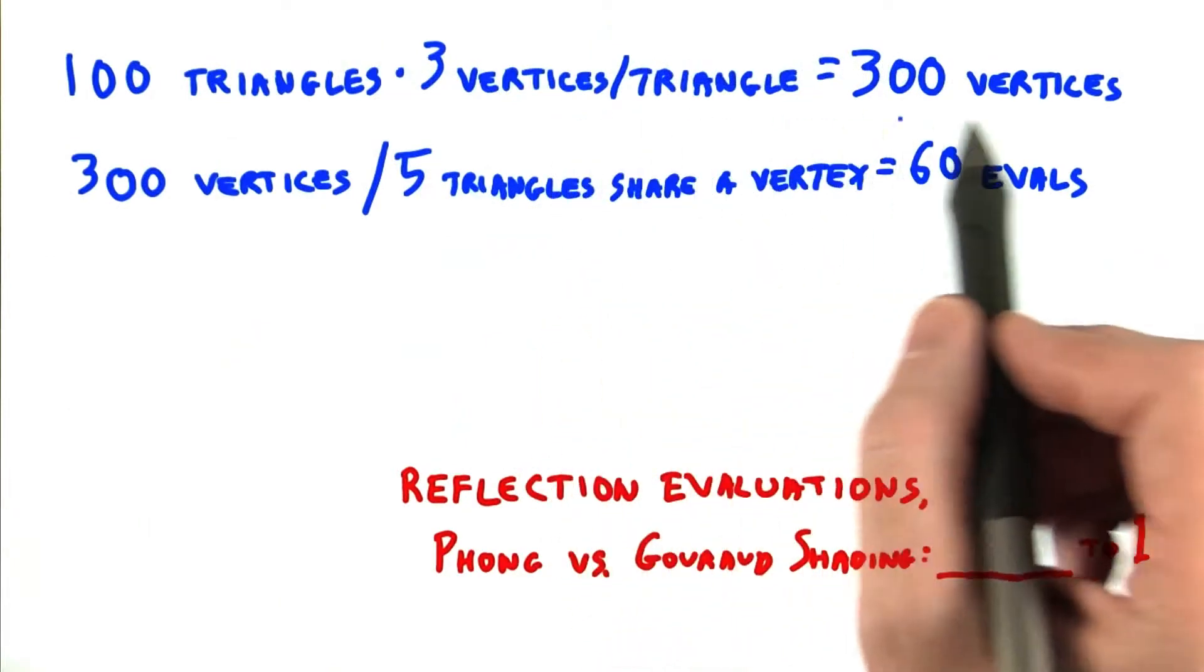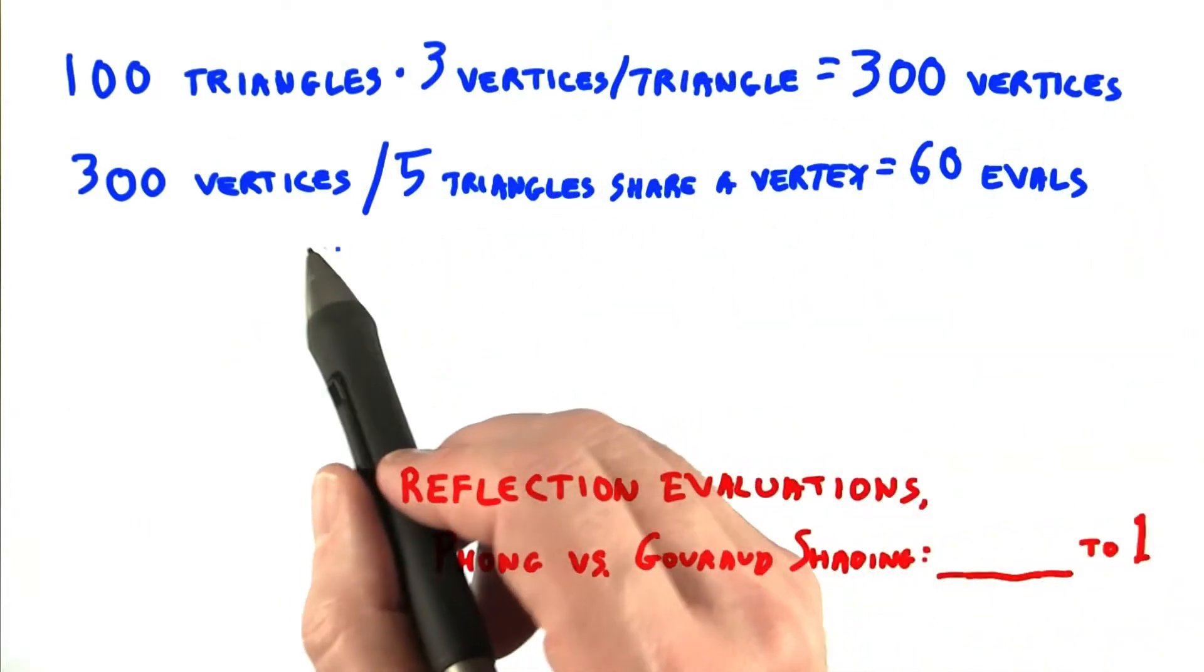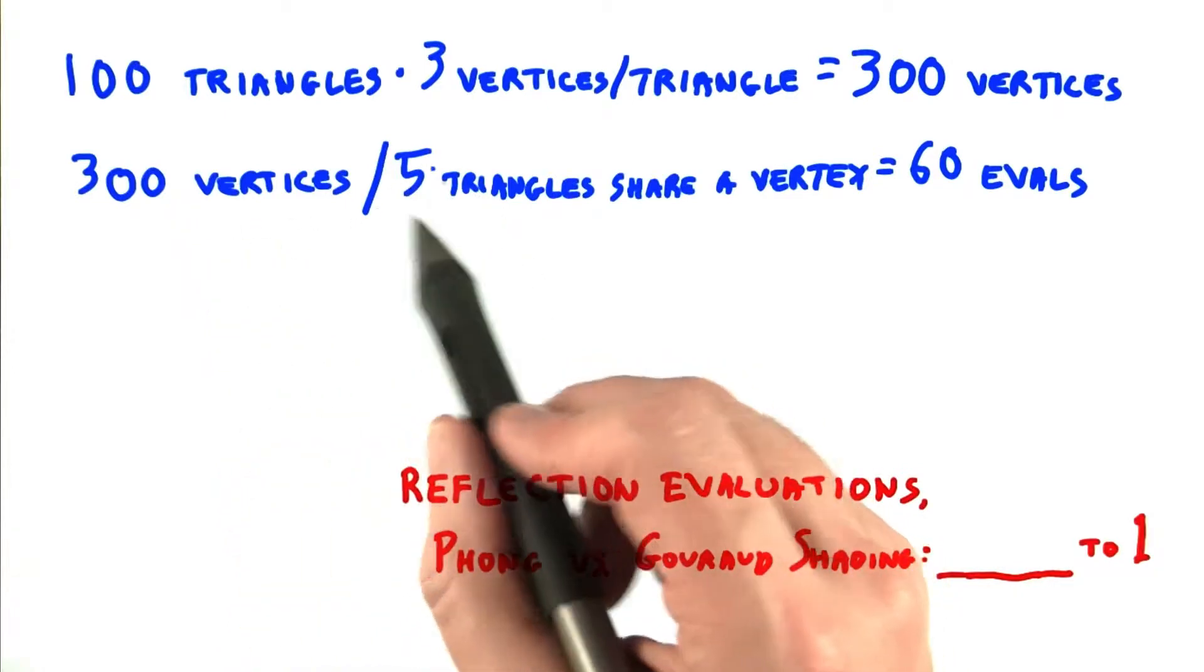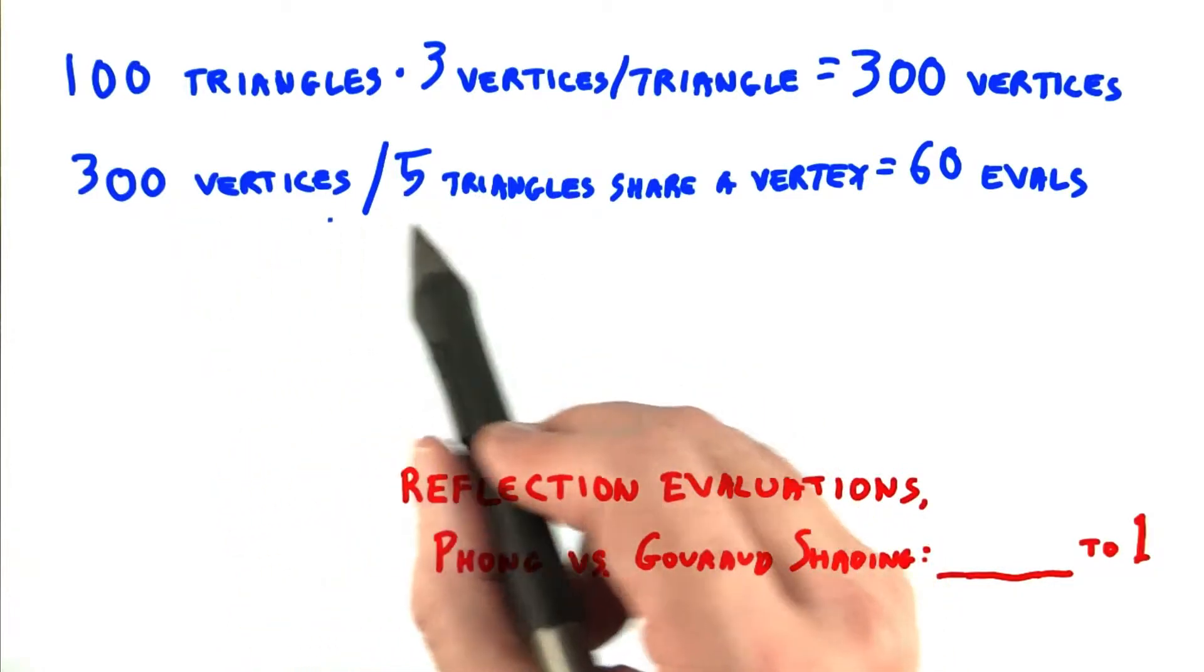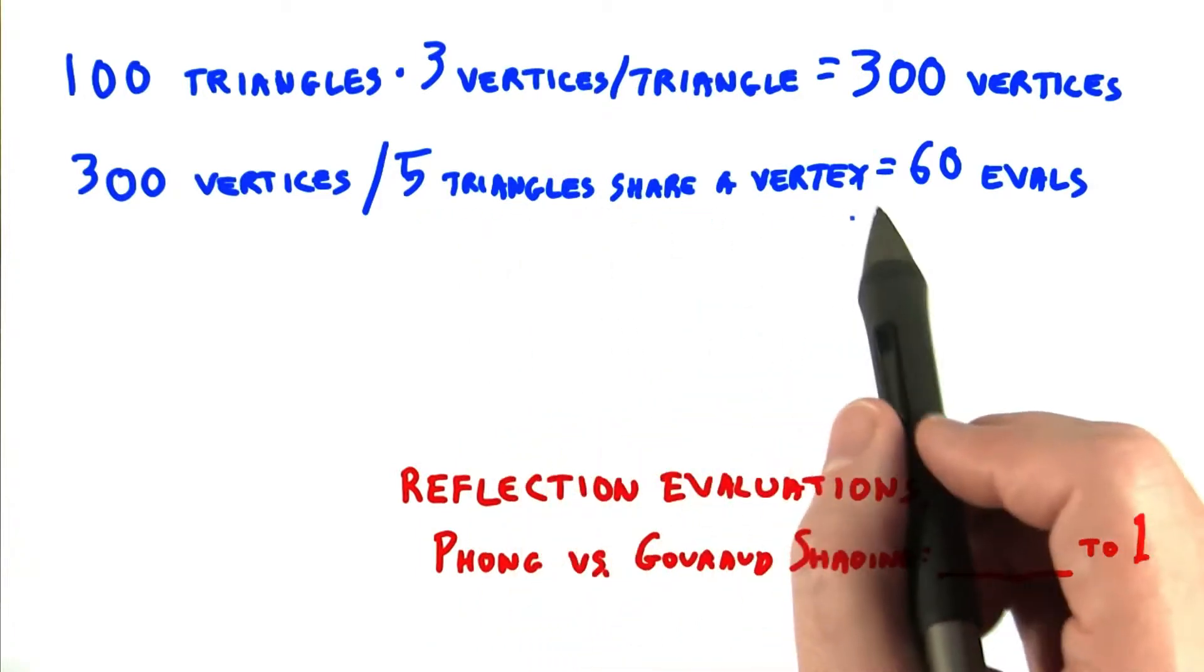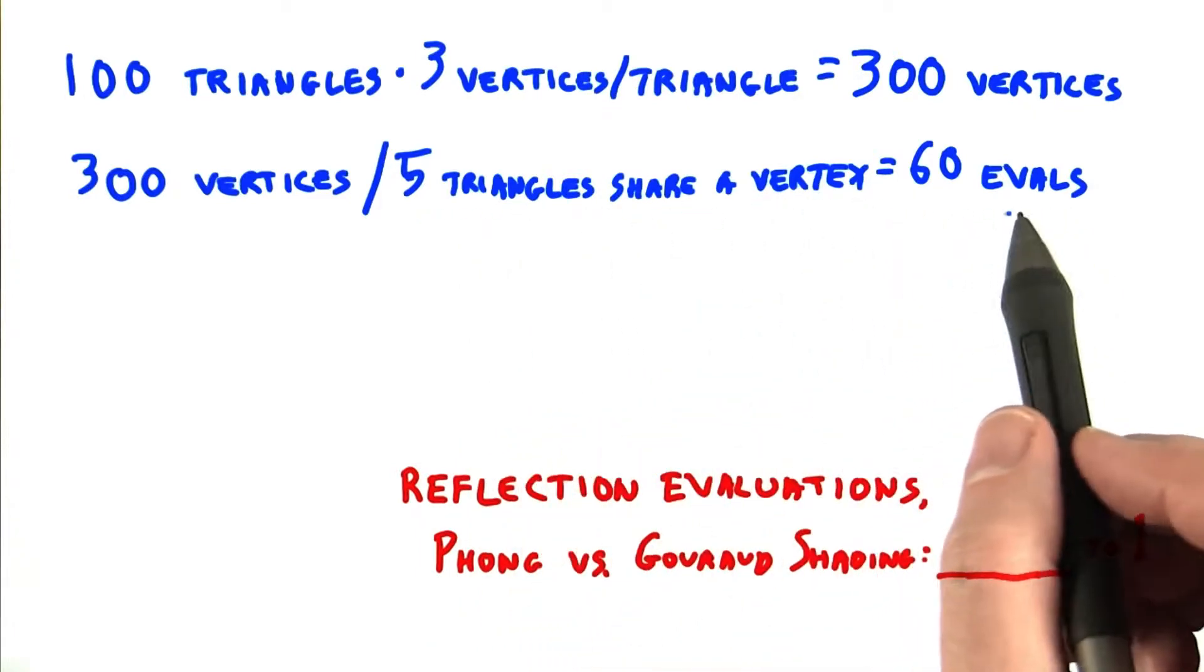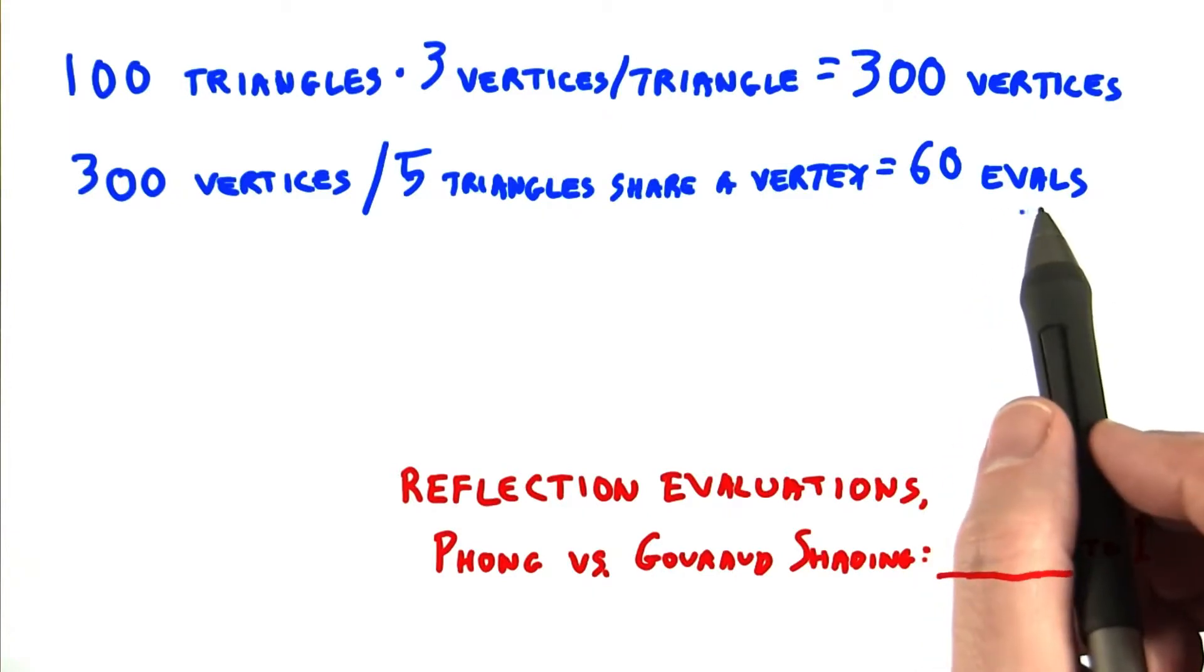100 triangles times 3 vertices per triangle gives 300 vertices. We know that each vertex's material calculation will be shared by 5 triangles, so that gives 300 vertices divided by 5 triangles that are sharing a vertex, and that gives 60 evals. In other words, 60 material calculations that are needed.